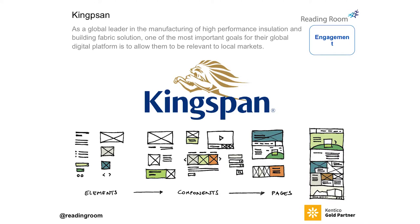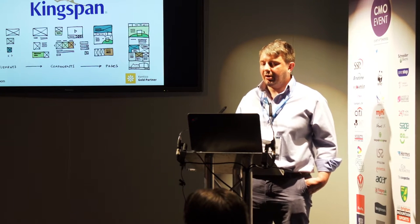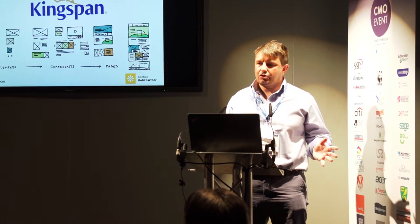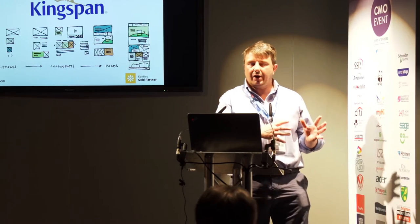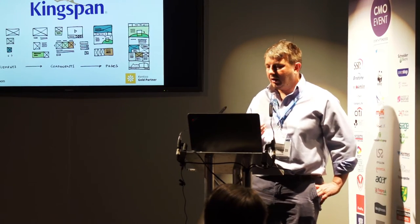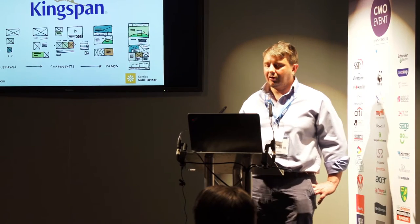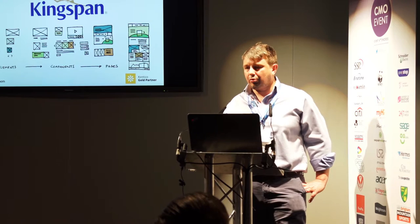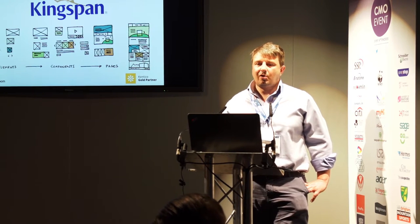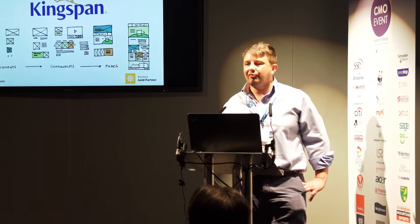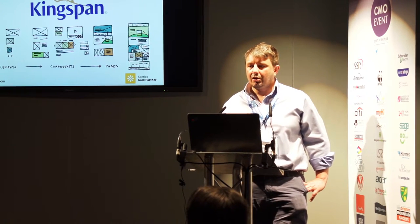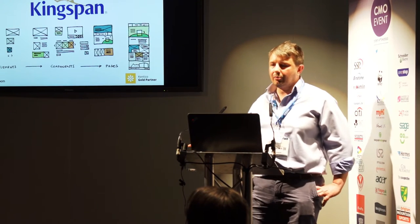We started working with Kingspan about a year ago. The site is due to go live in November. We're using the Kentico platform for them and it was quite an interesting challenge. Kingspan are in about 120 different countries. The way they traditionally sold their building products was by the way the business was organised — basically split into four divisions. That meant they could talk about their products, own their relationship with their clients, present the brand and products, and have those conversations at a regionally relevant level. You know, the way you manage and present your content in Germany is very different to the way you might in the US.